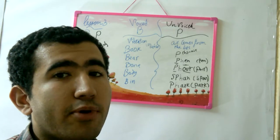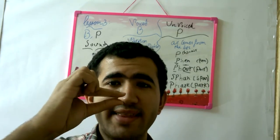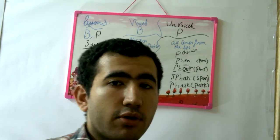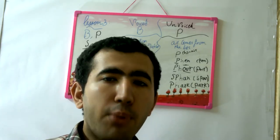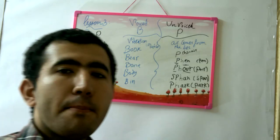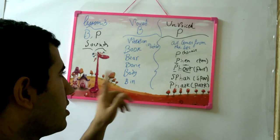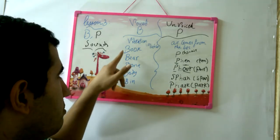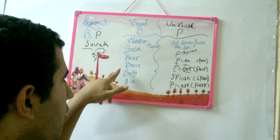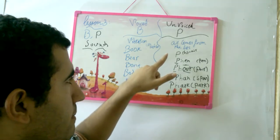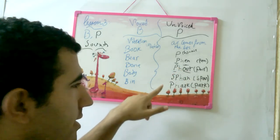For the voiced B, there's vibration, and when you say it your lips overlap — like that, overlap. Okay, so say: book, beer, boon, body, bin. Now compare: pen, poor, span, park — and book, beer, boon, body, bin.